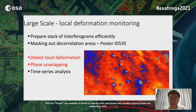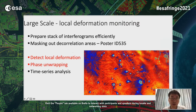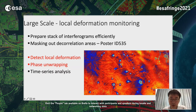For such local deformation signals — here is an example of subsidence caused by mining activity — we can see they are sparsely distributed in interferograms. We propose to first prepare a stack of interferograms efficiently and mask out decorrelation areas, using deep learning to get the mask. In my talk, I will focus on two things: how to detect local deformation patterns from rapid interferograms, and how to handle phase unwrapping of local deformation with very high-density fringes. I will also show some time series results.